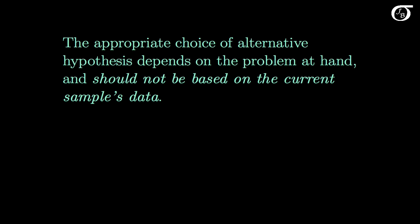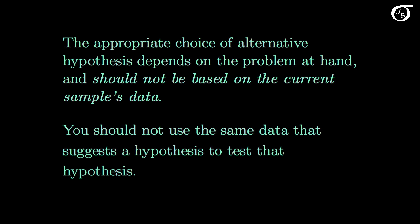The appropriate choice of alternative hypothesis depends on the problem at hand and should not be based on the current sample's data. You should be able to construct appropriate hypotheses without ever looking at your sample's data. As a general rule of thumb in statistics, you should not use the same data that suggests a hypothesis to test that hypothesis — that's considered cheating a little bit.